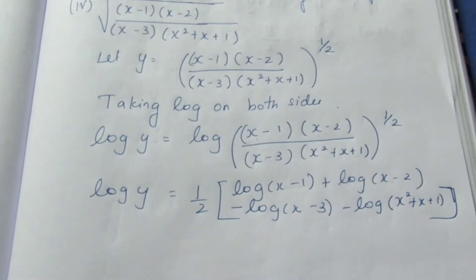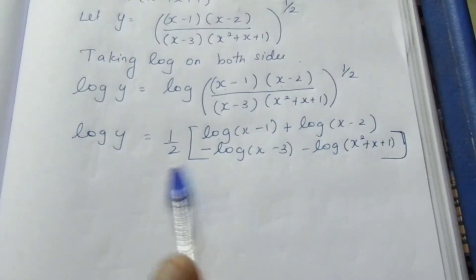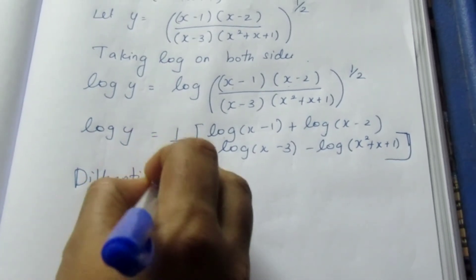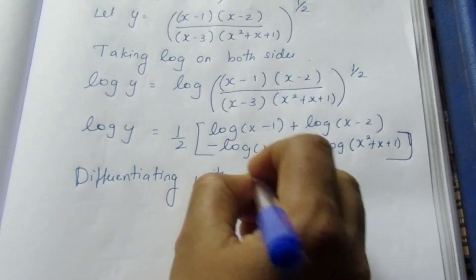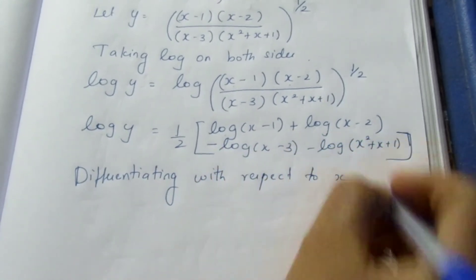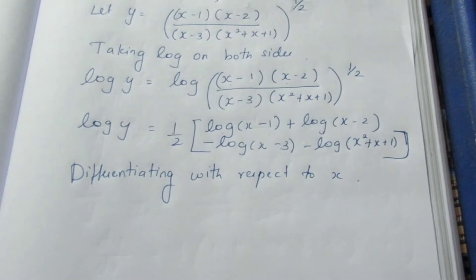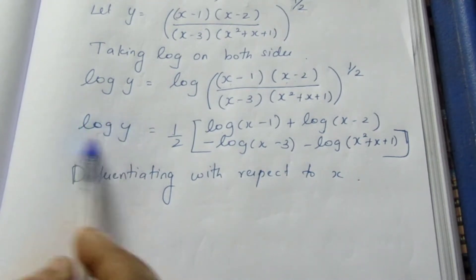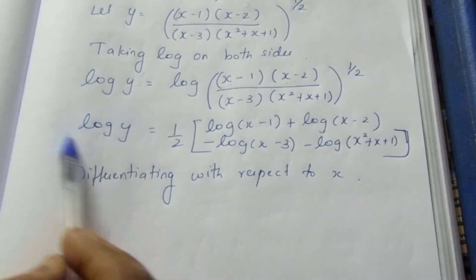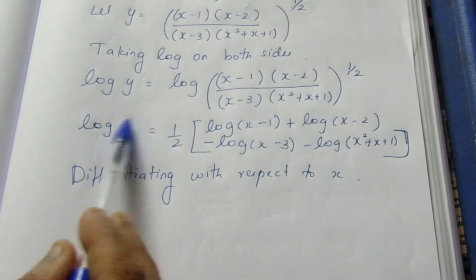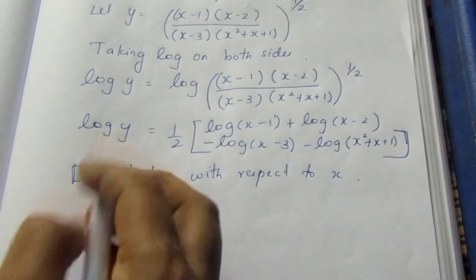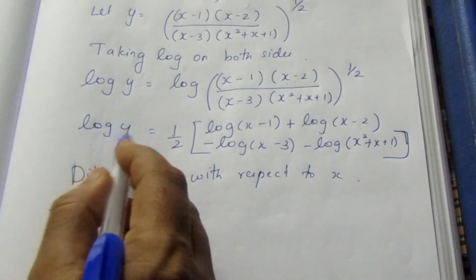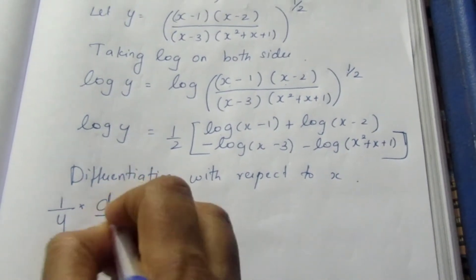Now we will differentiate both sides with respect to x. For log x, the derivative is 1/x. For log y, the derivative is 1/y times dy/dx, since we differentiate the inner function as well.